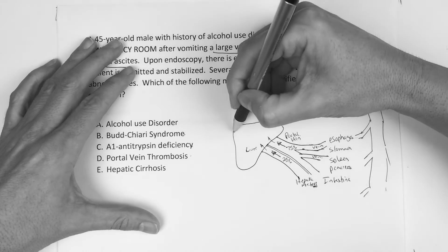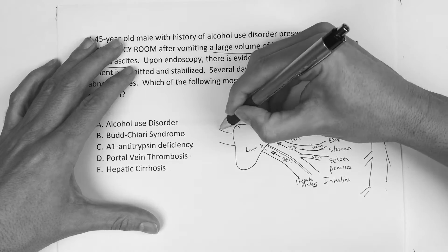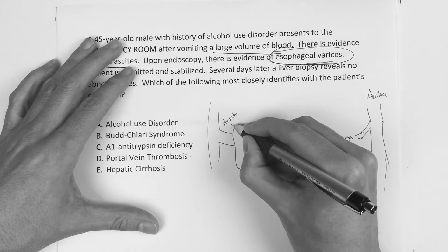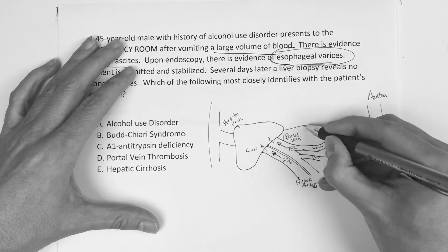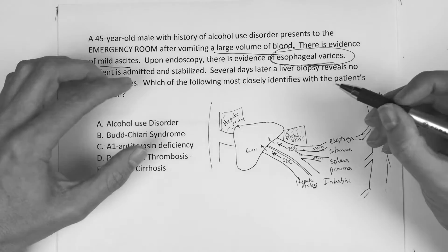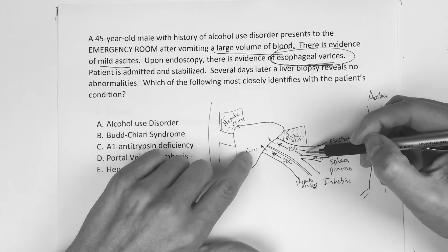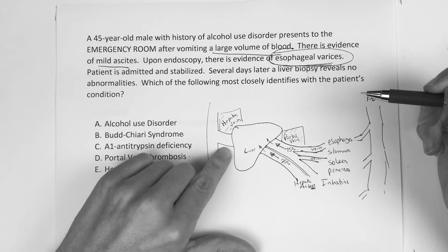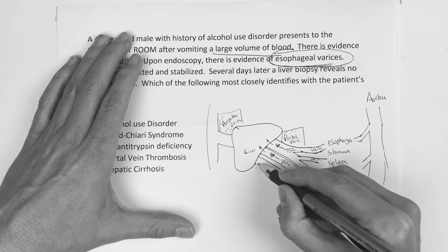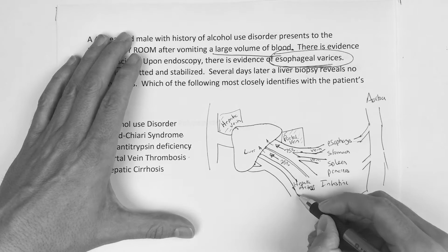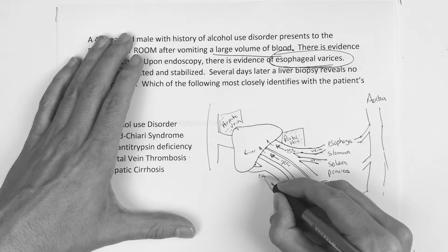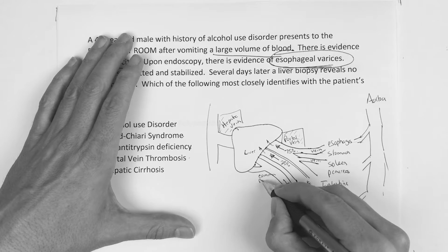As the blood flows out of the liver, this is called the hepatic vein. So again, portal vein and hepatic vein — you've got to know the difference. The portal vein goes into the liver, and then as the liver drains, it drains through the hepatic vein. The last piece of this anatomy is the common bile duct.